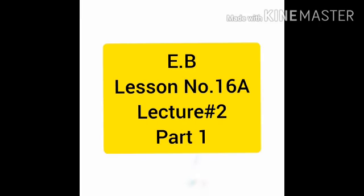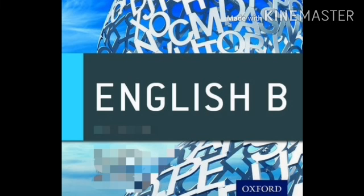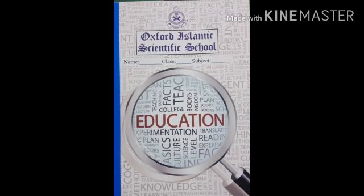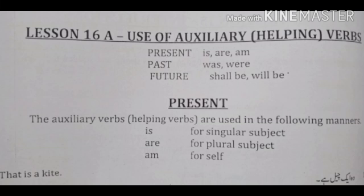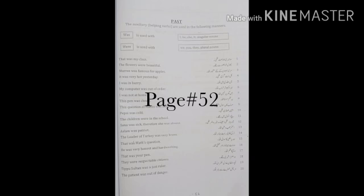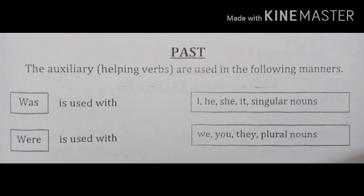Assalamu alaikum students. This is English B period. So take out your English B docket. Open lesson number 16A, page number 52. First of all, write CW and date at the top of the page.